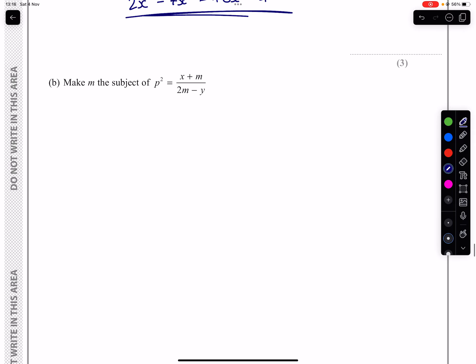Part B, make M the subject of the following formula. First thing we notice is that we have two different types of M and we have one of our M's being on the bottom of a fraction, which we most certainly do not want. So first thing we're going to do is multiply both sides by 2M minus Y to give us the following.